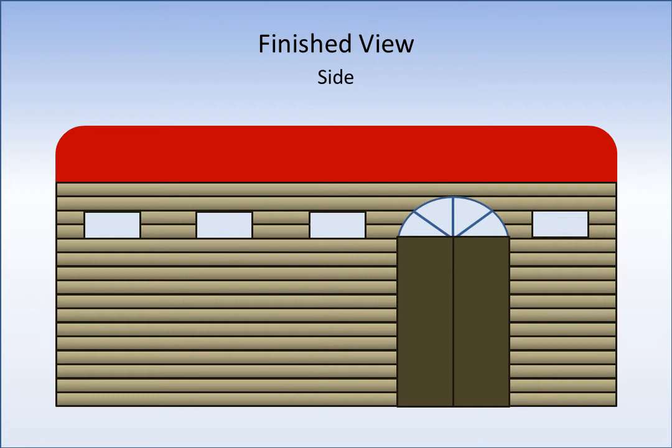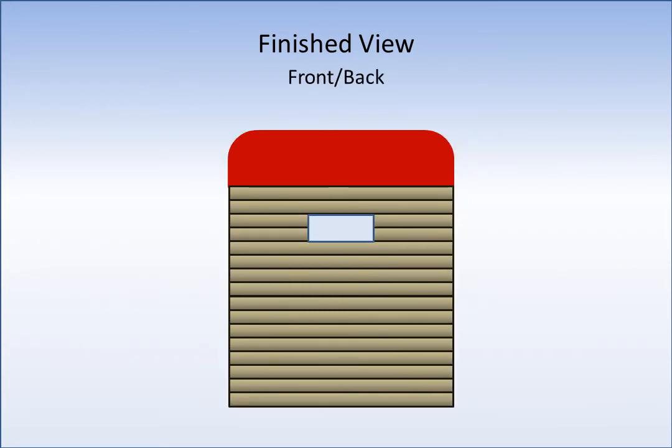Here is the side view of the tiny concert hall with the alternate arrangement. It shows the wood slats, the wood doors, the half-crescent of windows above the doors, the windows along the length of the concert hall, and the red trailer roof. Once again, the front and back look very similar to the original.